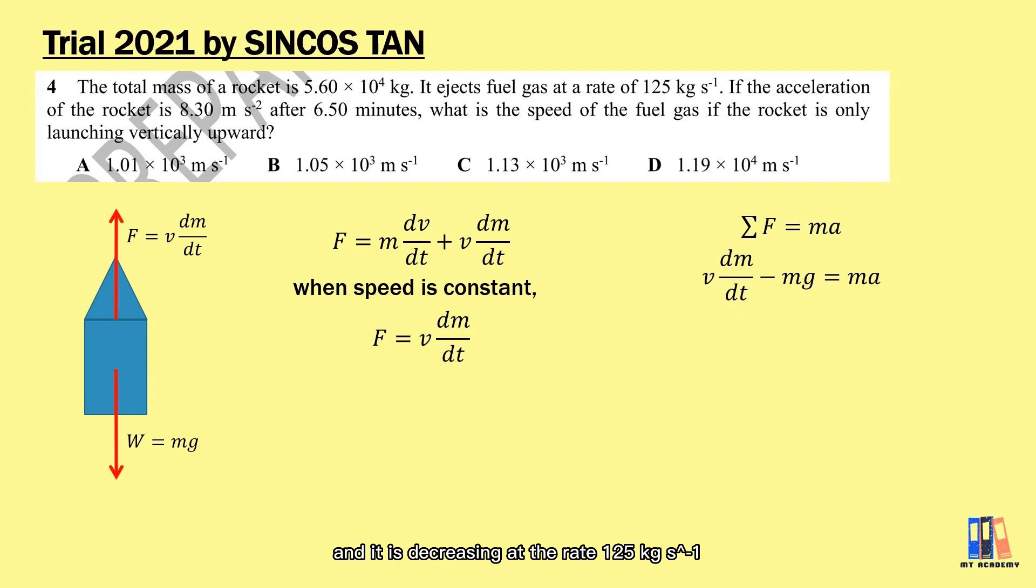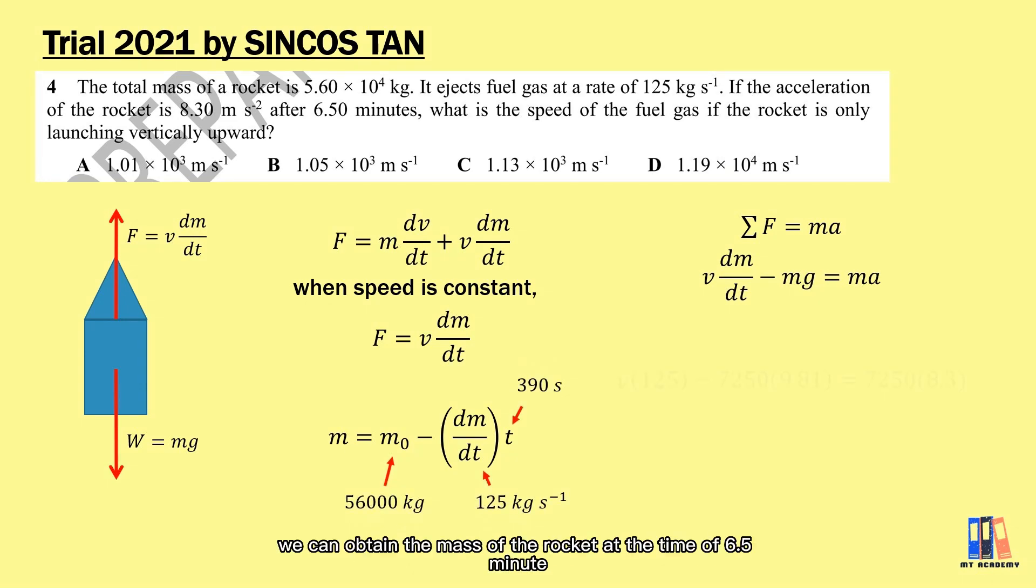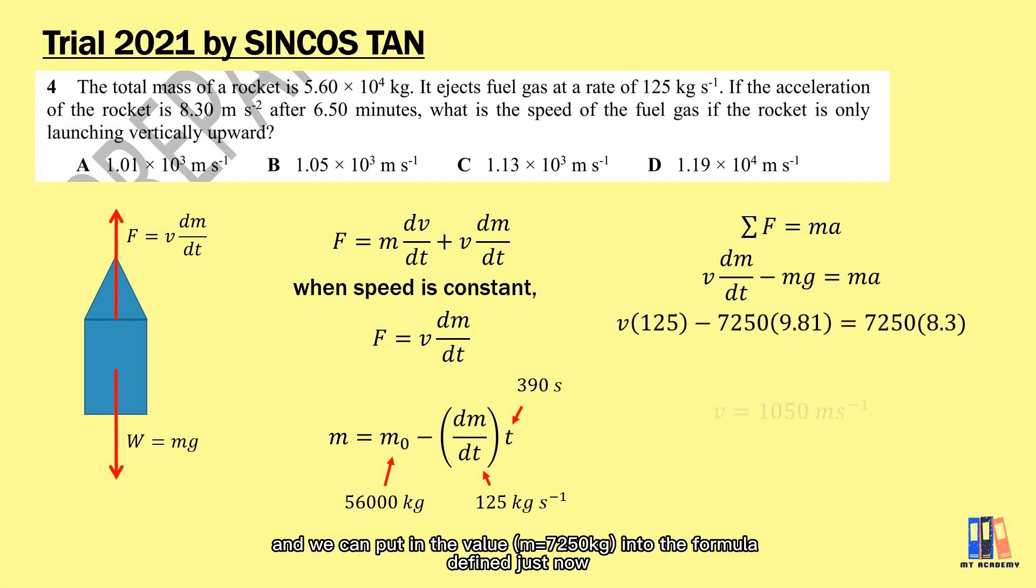So the mass at a certain time can be calculated by using the equation m₀ minus the rate of change of mass multiplied by time. Put in the value given in the question, we can obtain the mass of the rocket at the time of 6.5 minutes is 7,250 kg. And we can put in the value into the formula defined just now, and we can get the value of velocity equals 1,050 m/s.